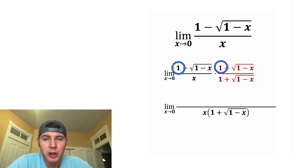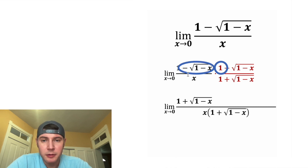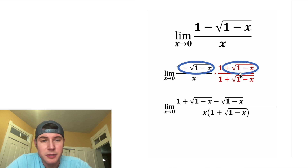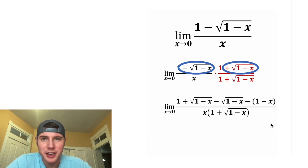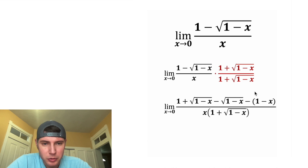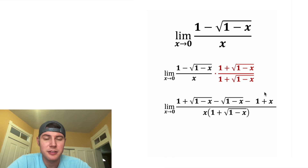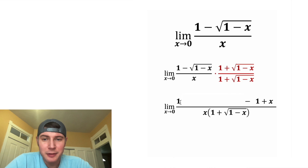Now on top, let's multiply this out. We have 1 times 1, which gives us 1. Then 1 times the square root of 1 minus x, which is that square root. Then negative square root times 1, which is the negative square root. And negative square root times positive square root: a negative times a positive is negative, and the square root of 1 minus x times itself gives us 1 minus x. Distributing the negative to both those terms, the positive 1 becomes negative 1 and the negative x becomes positive x. The two square root terms cancel, and the positive 1 and negative 1 also cancel.